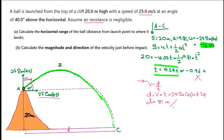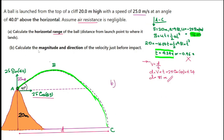The horizontal velocity is 25 cos 40, multiplied by the total time of 4.24 seconds, which gives 81.2 meters. So the horizontal range of the ball is 81 meters.